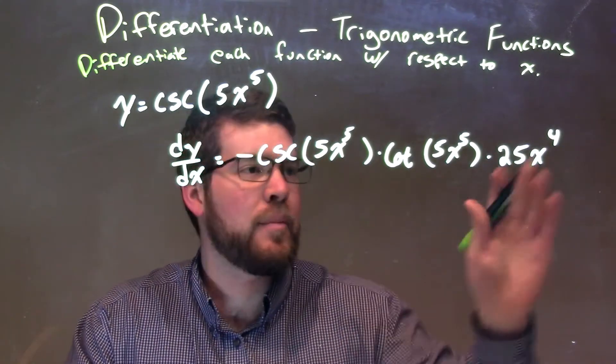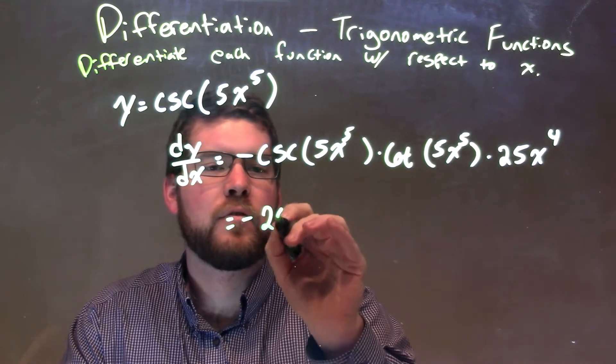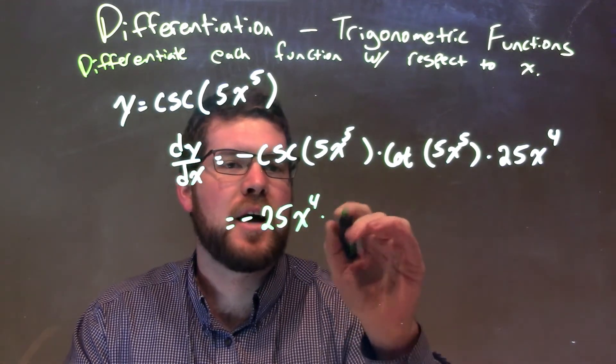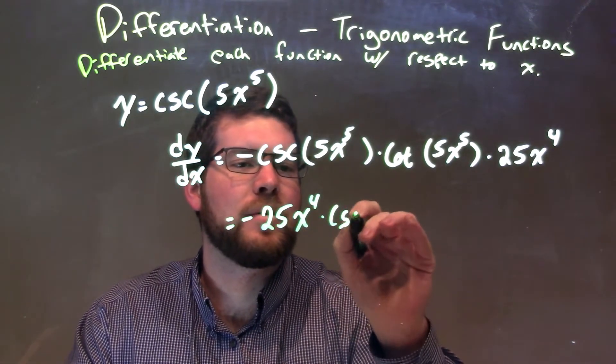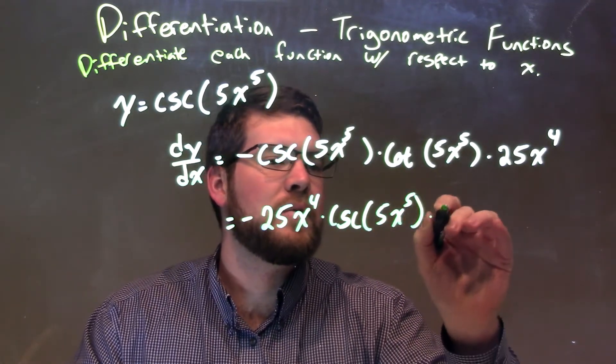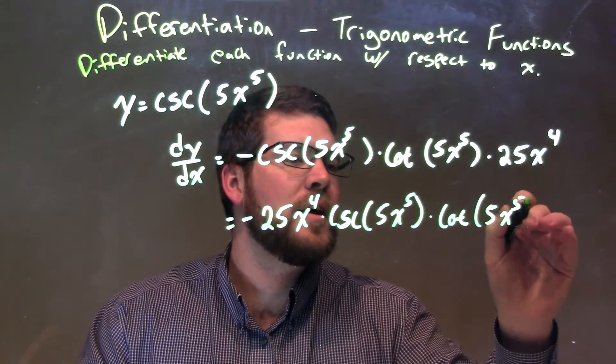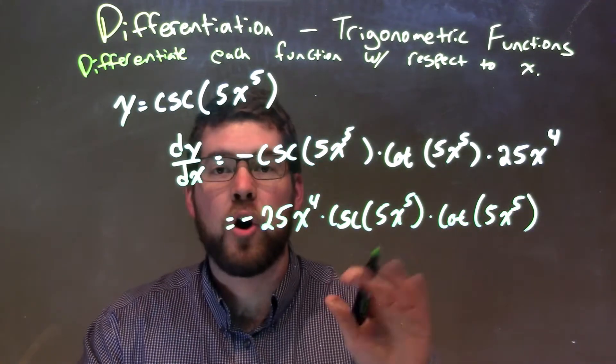From there, we can simplify by bringing the 25x to the 4th out front. So we have negative 25x to the 4th times the cosecant of 5x to the 5th times the cotangent of 5x to the 5th. And there we have it, we have our derivative.